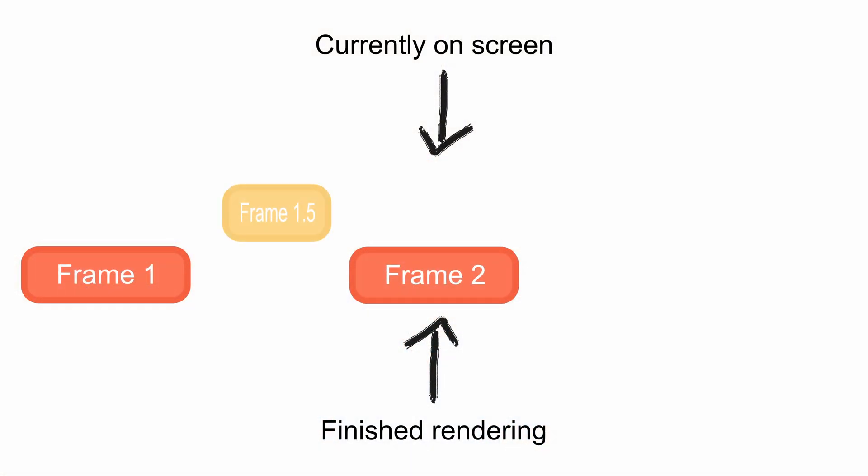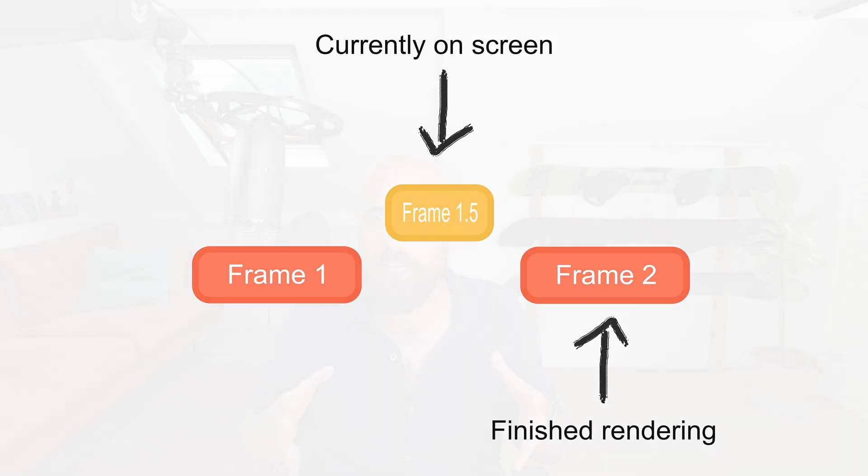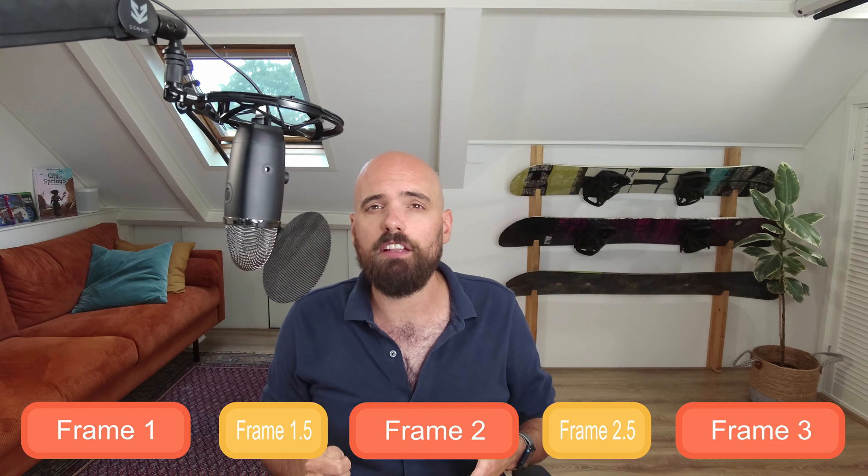And so for frame generation to work, we need to offset the rendering from displaying the frames to screen. When frame 2 has finished rendering, we quickly generate frame 1.5 and display that frame instead of frame 2. To keep things simple for this example, we'll say that frame generation doesn't add extra rendering time to generate frame 1.5. This means that if we slap each generated frame between each normally rendered frame, our frame rate will be doubled — it will now be 120 instead of just 60. EPIC!